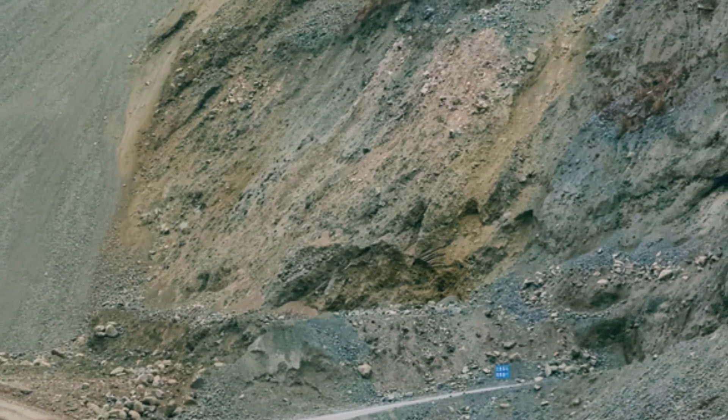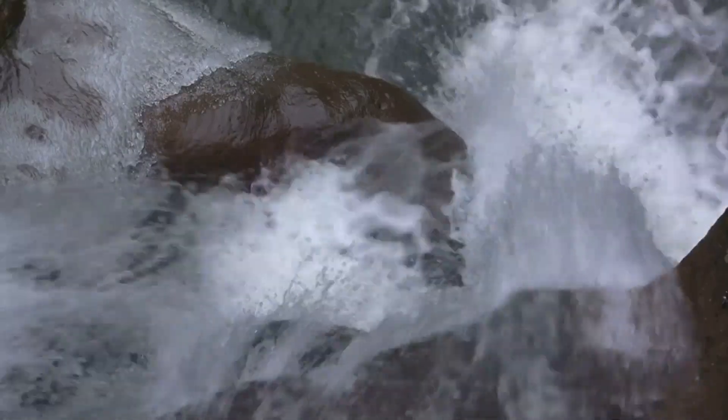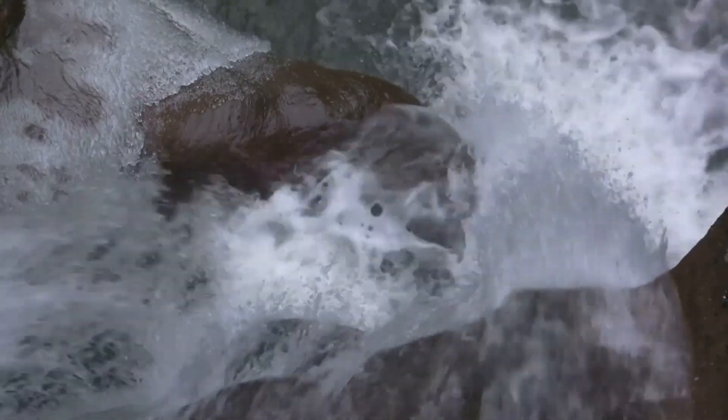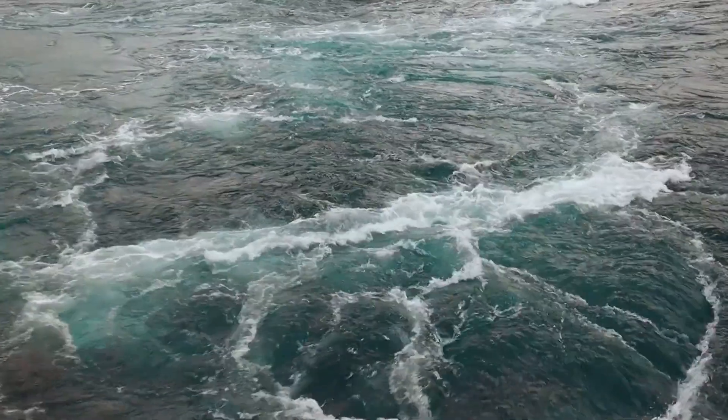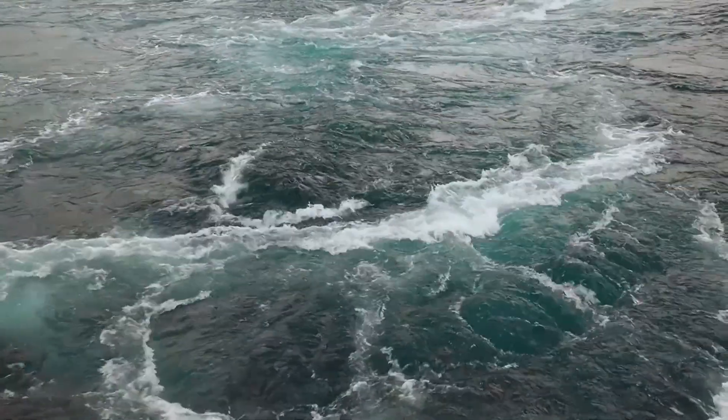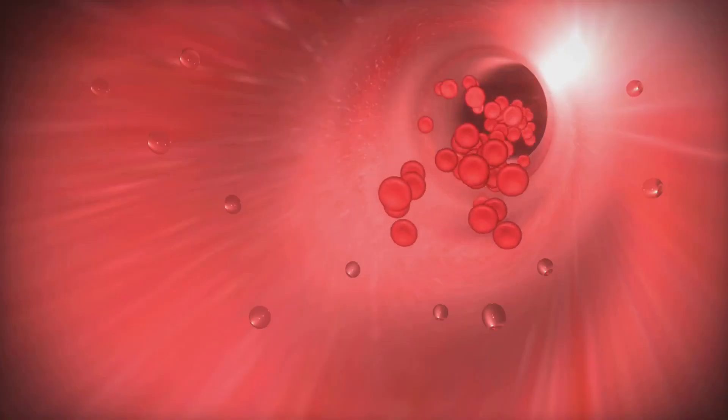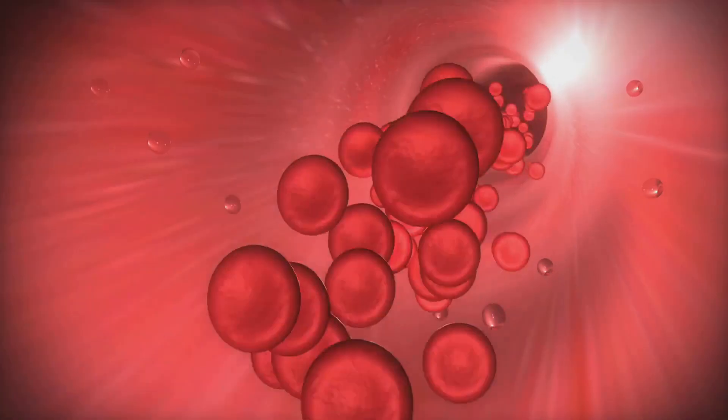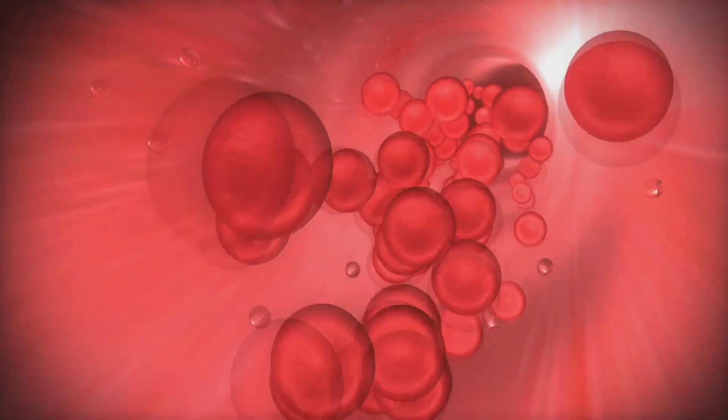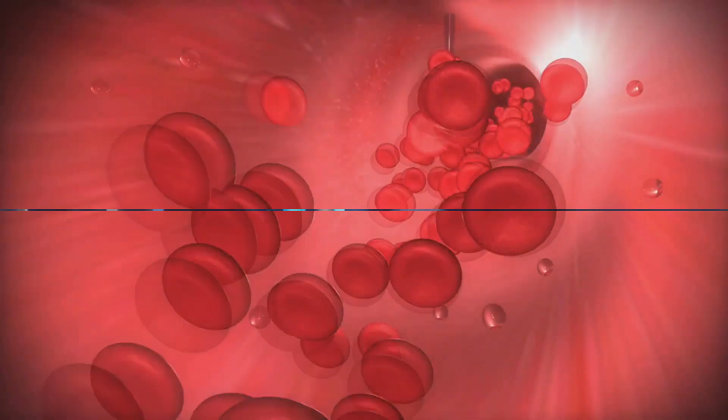Imagine a river flowing downhill, where the slope represents the concentration gradient and the river's width represents the membrane permeability coefficient. A steeper slope and a wider river result in a faster flow of water, analogous to a higher drug flux. Similarly, a higher concentration gradient and a greater permeability coefficient lead to a more rapid movement of drugs across the membrane.